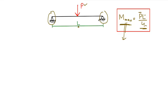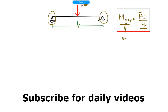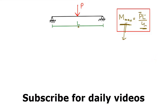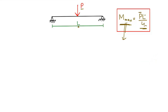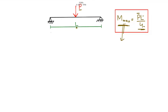Here we will only show the maximum bending moment for a simply supported beam with a pointed load. You can see a pointed load P acting here. The load P is acting at the center of the beam, so the distance from each support to the load will be equal to L/2, and this side will also be equal to L/2 because the load is acting at the center of the beam.